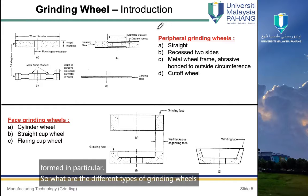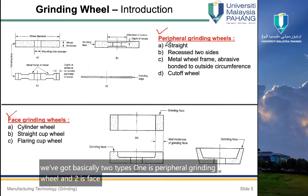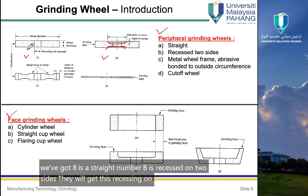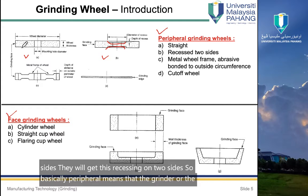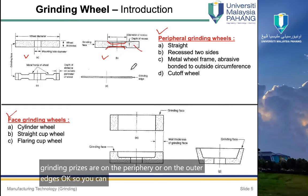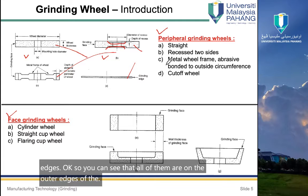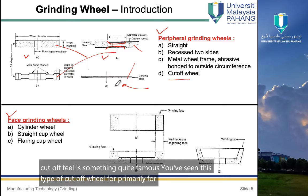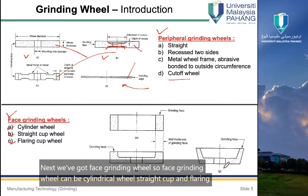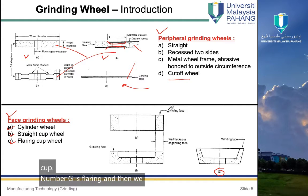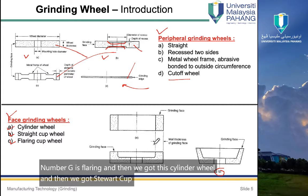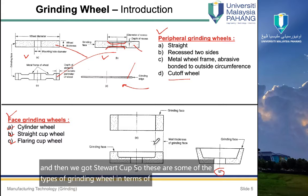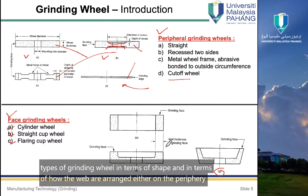There are basically two types of grinding wheels: peripheral grinding wheels and face grinding wheels. Peripheral wheels include straight and recessed-on-two-sides varieties, where the abrasives are on the periphery or outer edges. We also have metal frame wheels and cutoff wheels, which are used primarily for cutting operations. Face grinding wheels include cylindrical wheels, straight cups, and flaring cup wheels, where the abrasives are arranged on the face of the wheel.